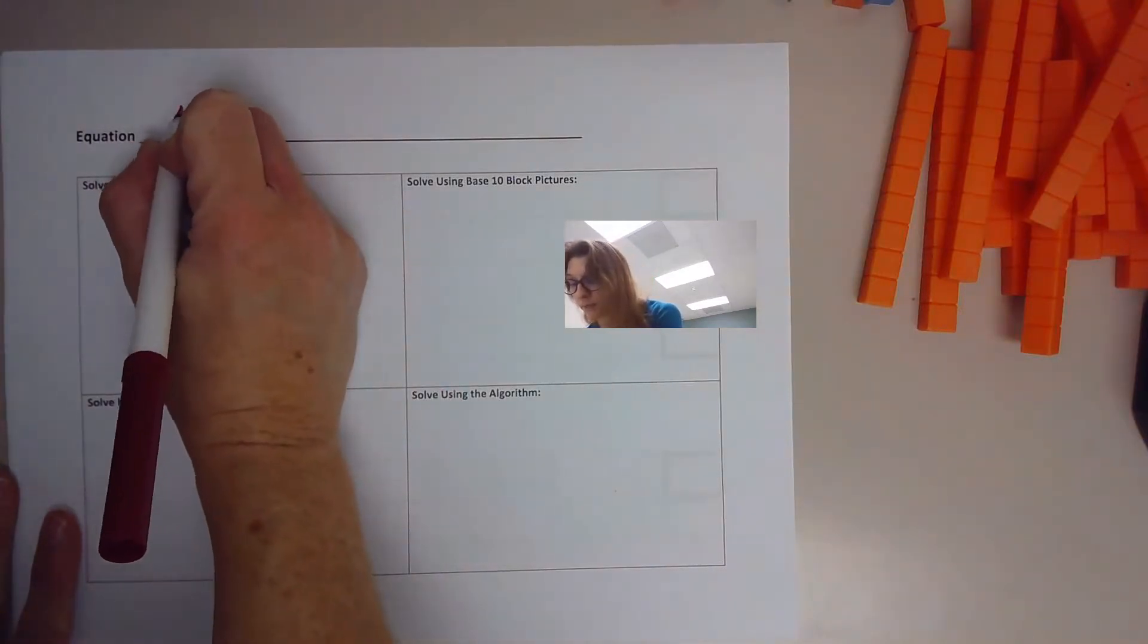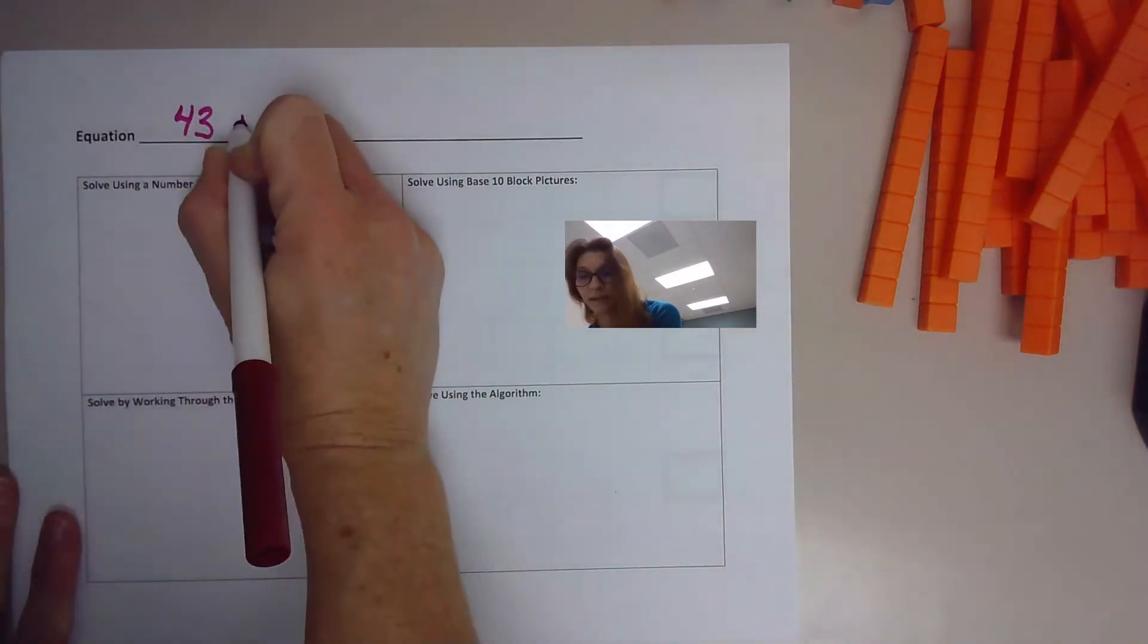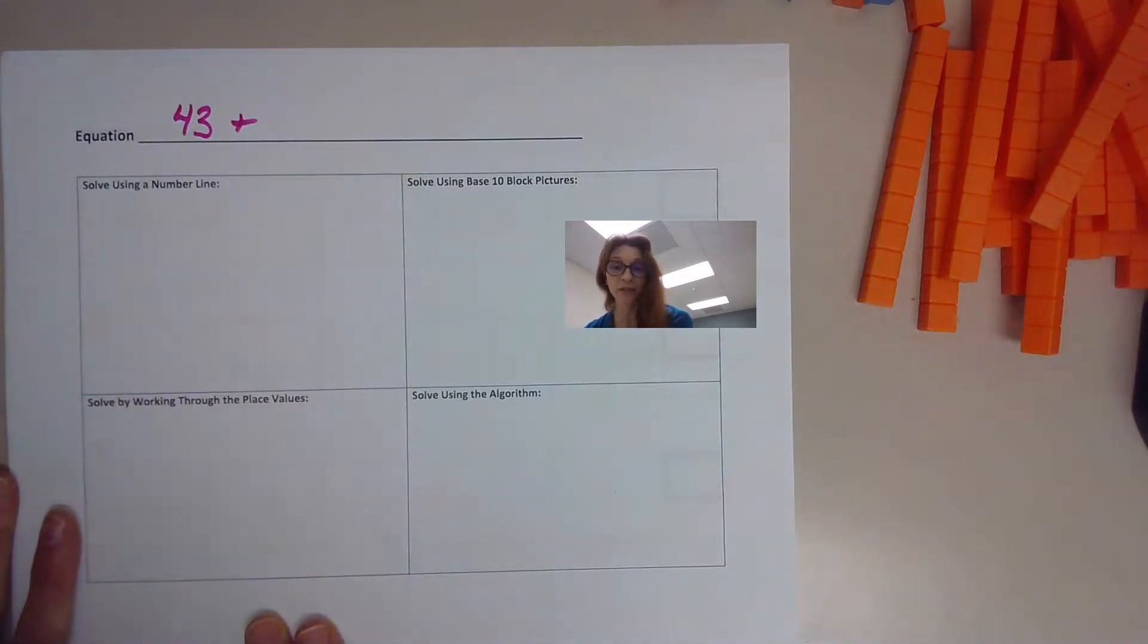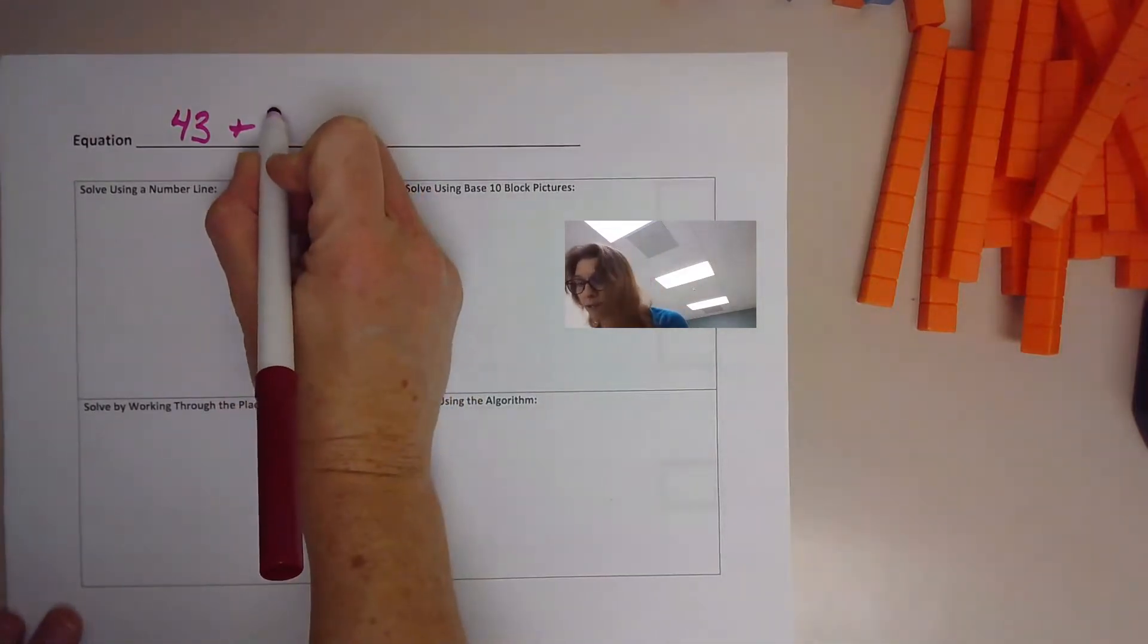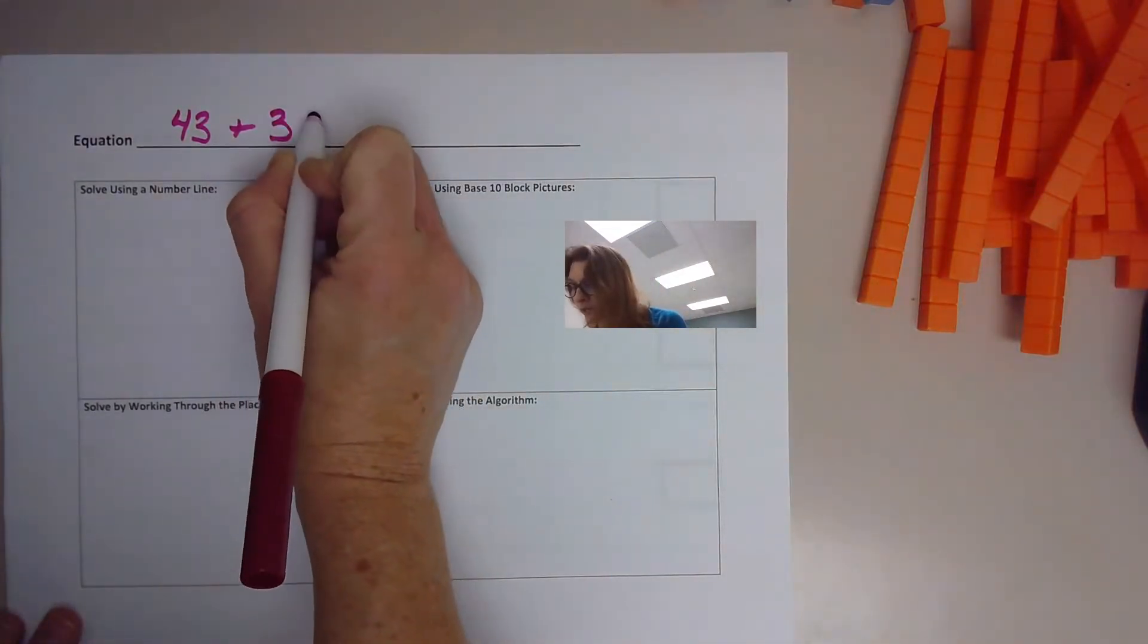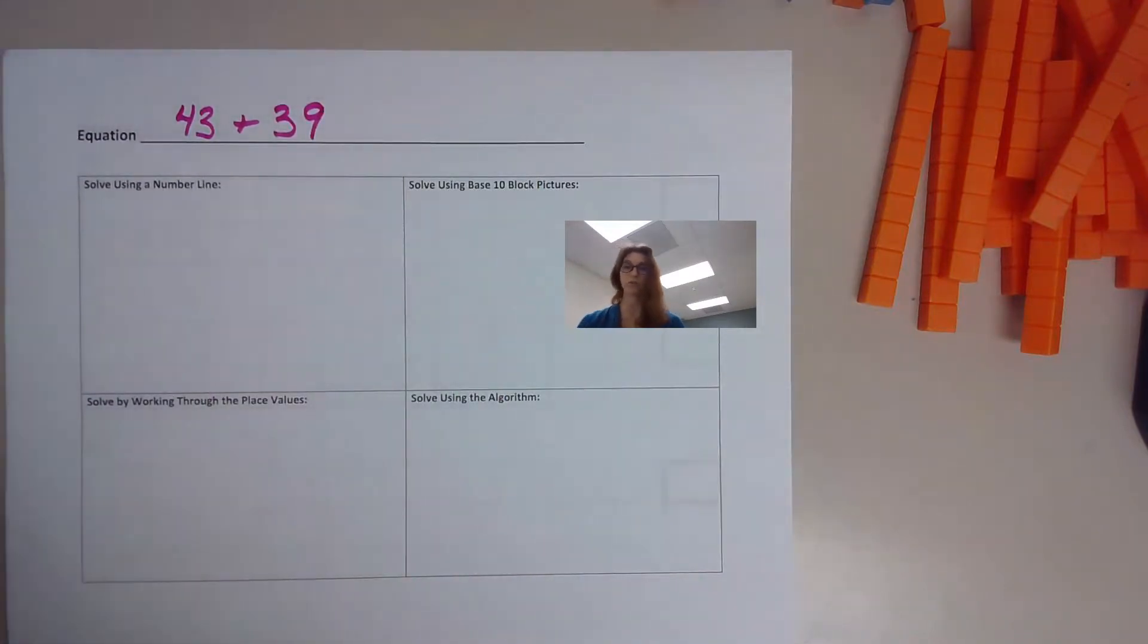which was 43, and let us add to it. So we're going to make it larger. So we're going to have 43, and we're going to add, let's say we're going to add 39 to 43.